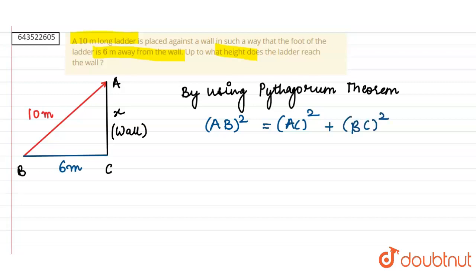So let's put the value of AB, AC, and BC. Hence we get 10 whole squared equals x squared plus 6 squared.